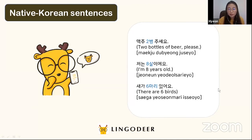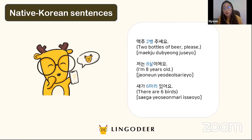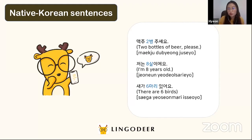Another example: 새가 여섯 마리 있어요 — There are six birds. 새 means birds, 여섯 마리 is six (with animal counter), and 있어요 means there are. Just like 맥주 두 병, we are counting things, so we use Native Korean number 여섯.